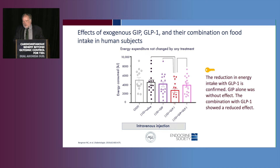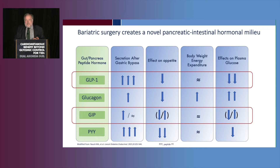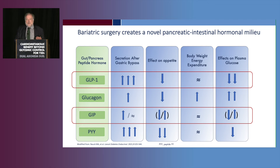GIP infusions appeared to do a little but that was not significant. Then came the surprise: co-administration of GIP and GLP-1 actually reduced the food intake reduction observed with GLP-1 alone — exactly the opposite of what the animal experiments had shown. That is the current state of the art, and we will probably have an explanation in a couple of years. What this tells us is that under certain circumstances, combined agonism at the GIP and GLP-1 receptors can produce greater effects.